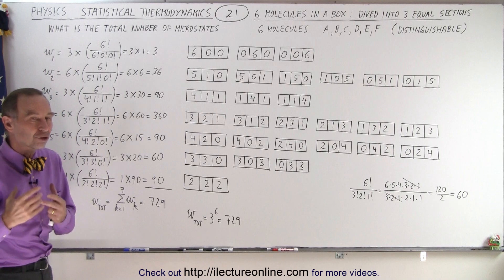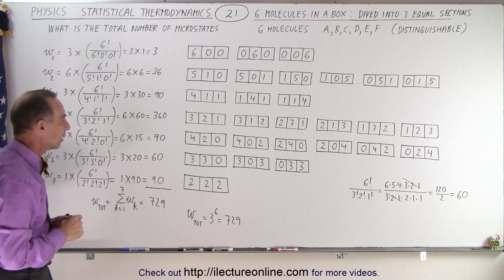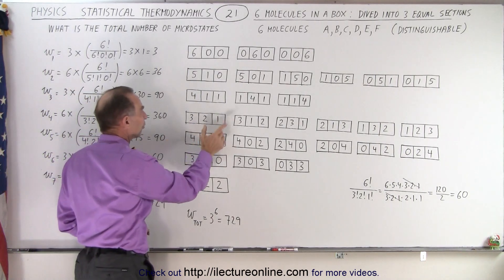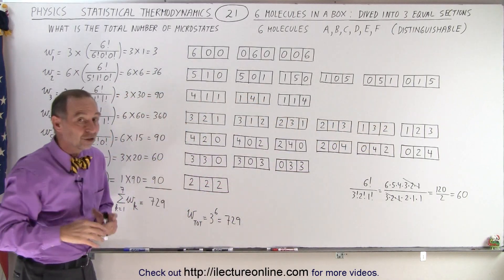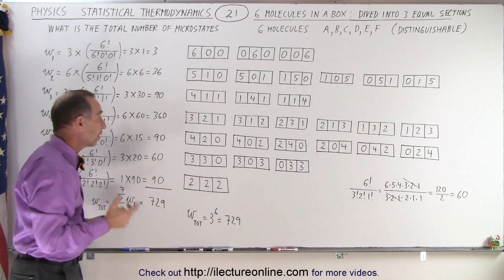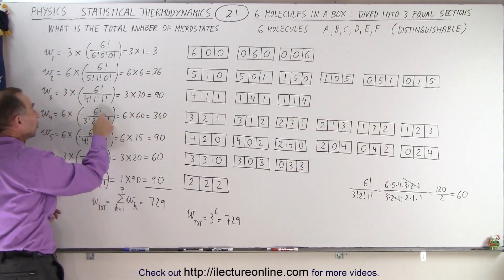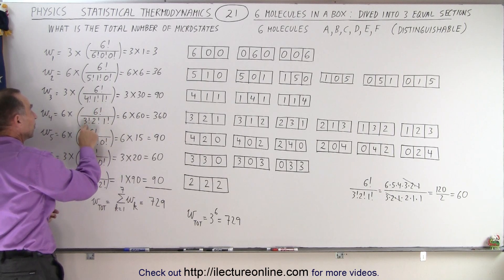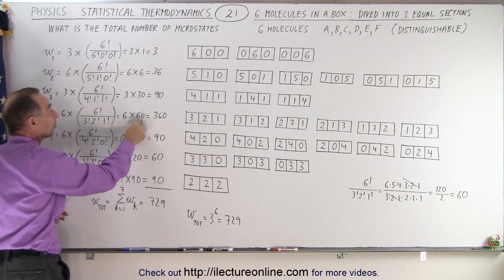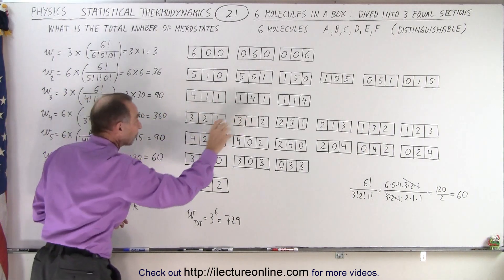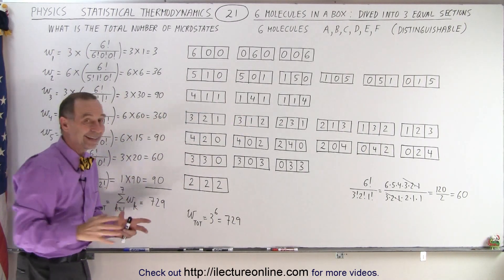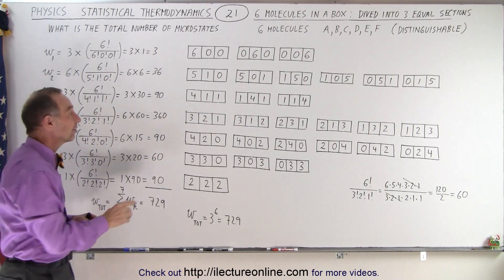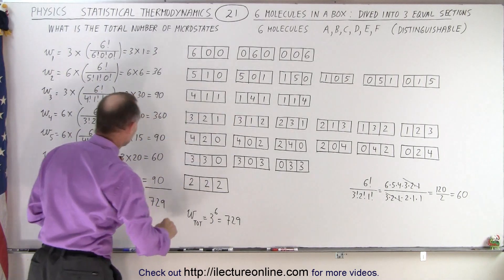Here's the case where we have the greatest number of microstates: (3,2,1). There are six different combinations like this, and since all of them are distinguishable, we use the equation six factorial divided by three factorial, two factorial, one factorial, which equals 60. Since there are six different configurations, six times 60 gives 360 total microstates in this particular case.